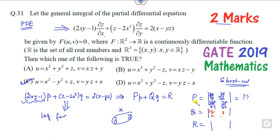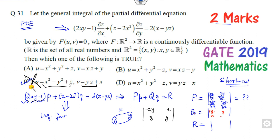To find P, take the partial derivative of u with respect to y — that gives minus 2y — and the partial derivative of u with respect to z, which is 1. Then compute the determinant. Can it be 2xy minus 1? Looking at option A: partial derivative with respect to y gives 2y, and with respect to z gives 1. The determinant comes out as 2xy minus 1. Yes — that confirms it.